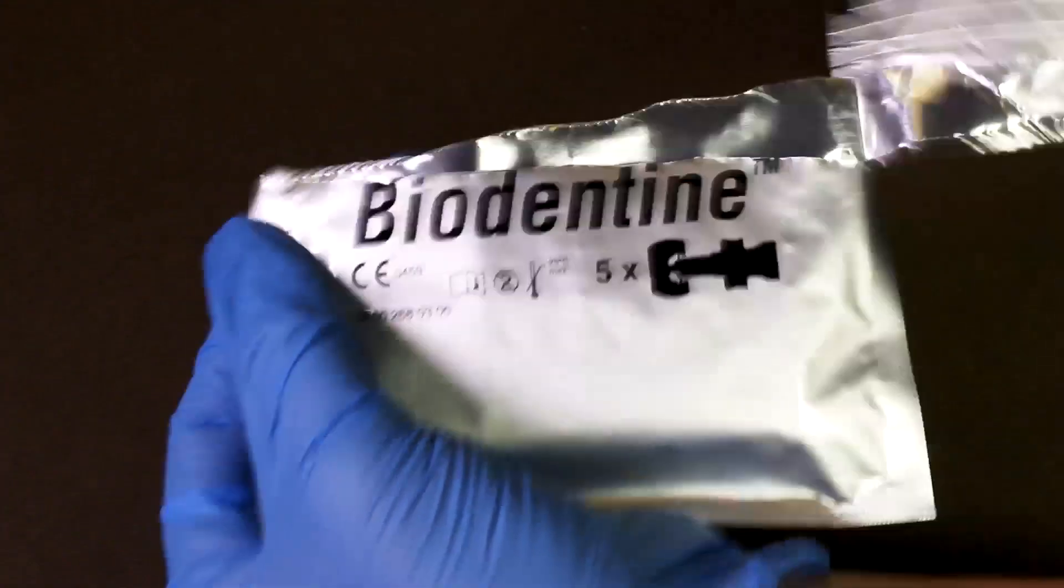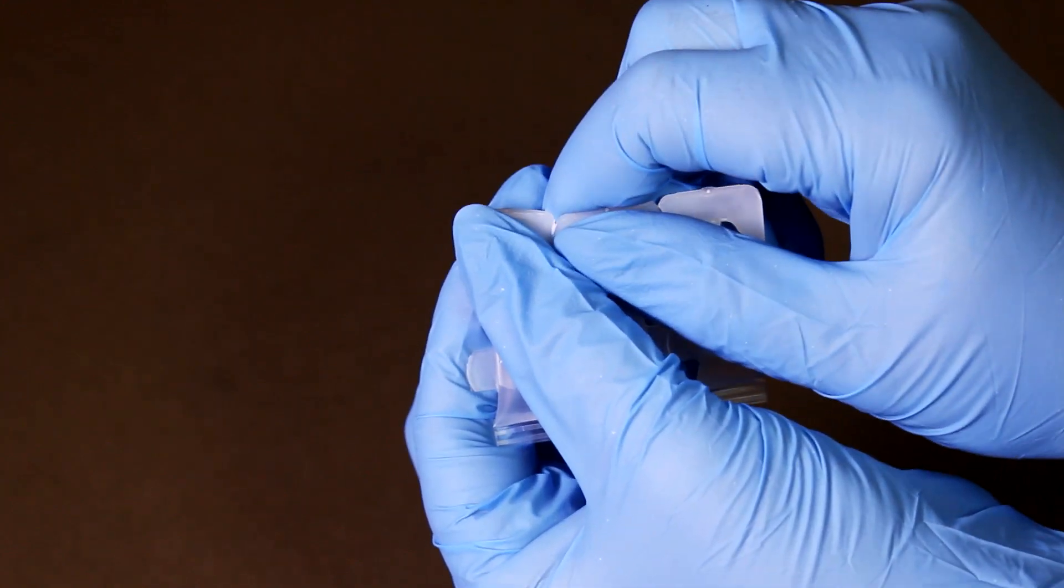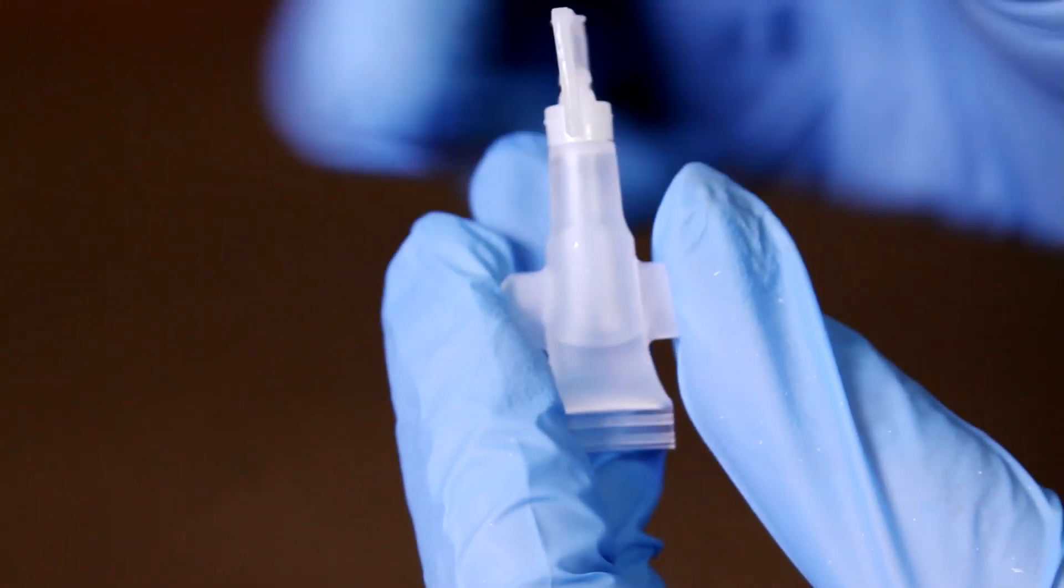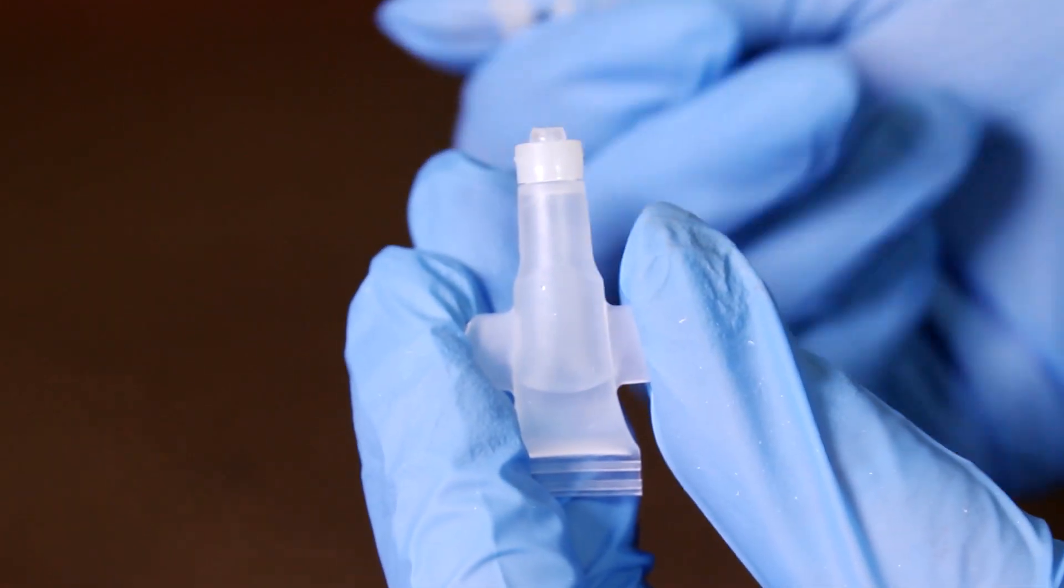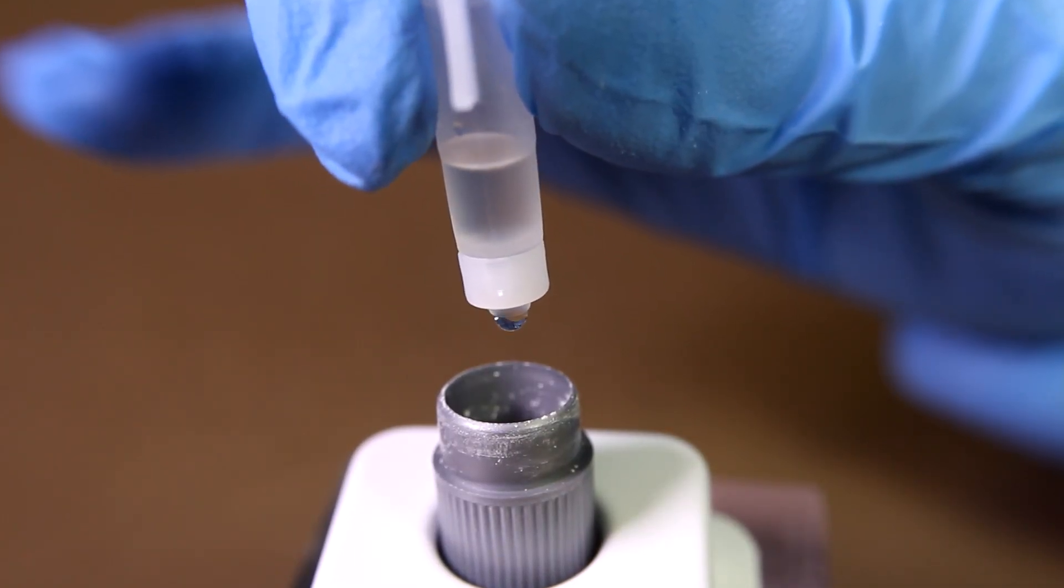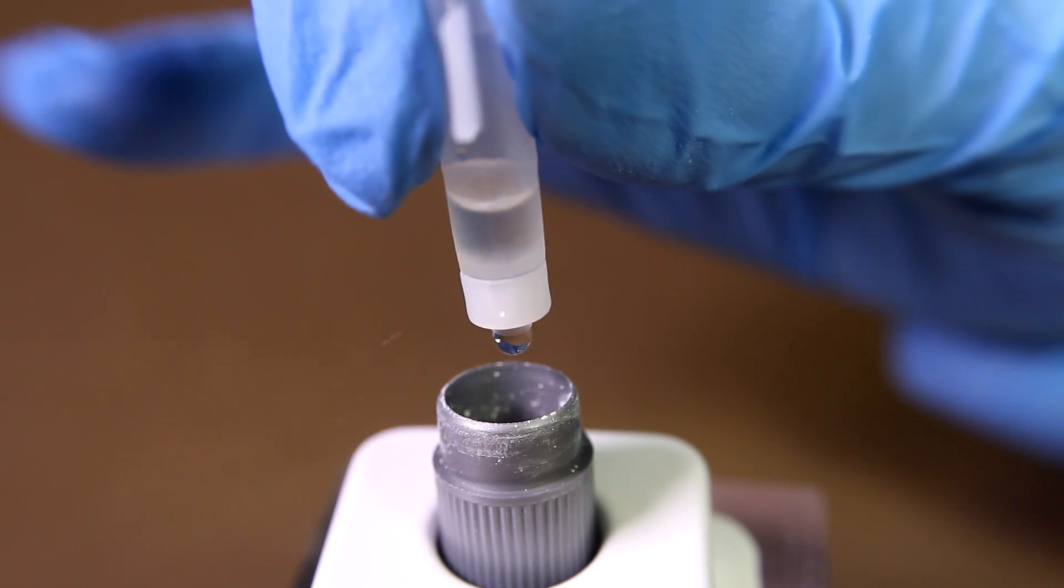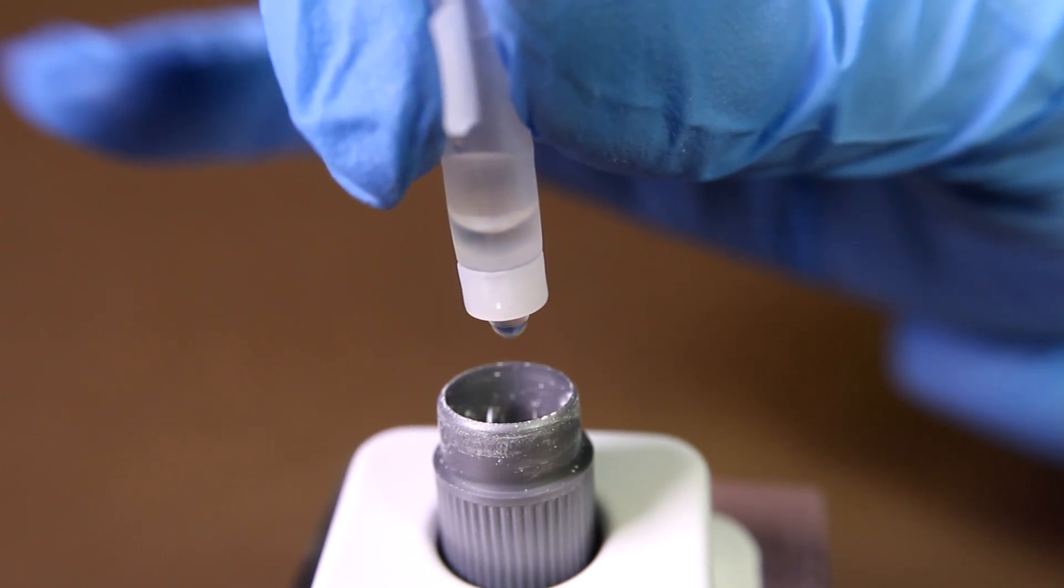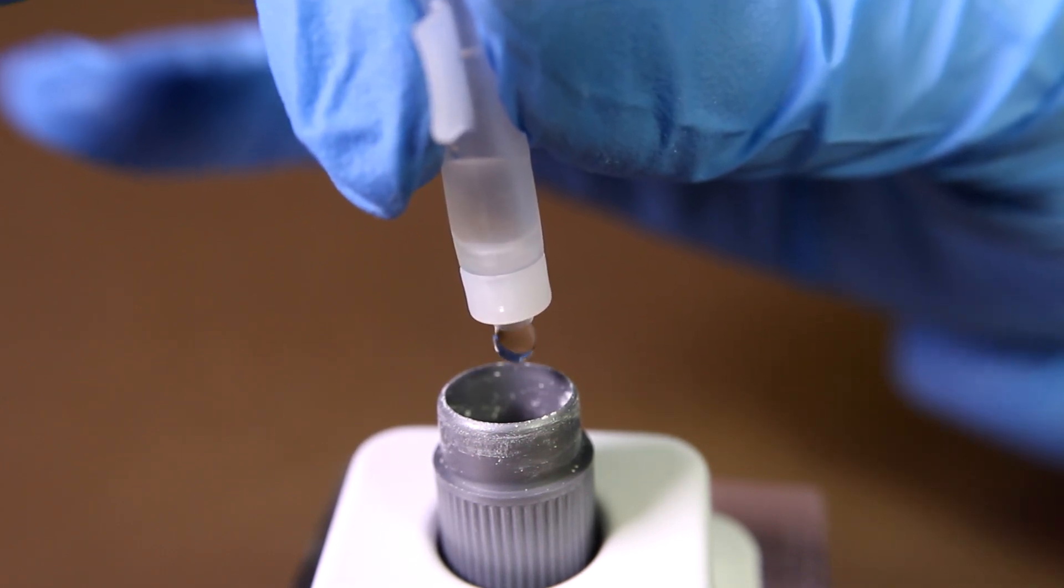Open the pipette package and snap off one pipette. Twist and pull the pin out of the top of the pipette. Then, holding vertically, squeeze the pipette and maintain pressure until 5 drops have been dispensed into the capsule.